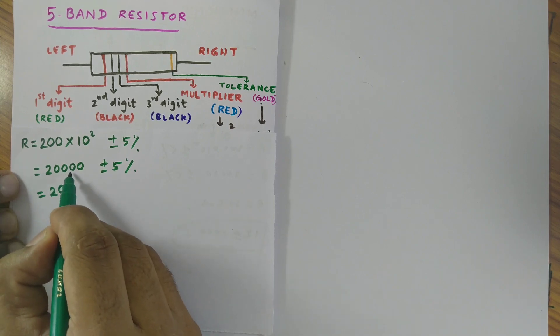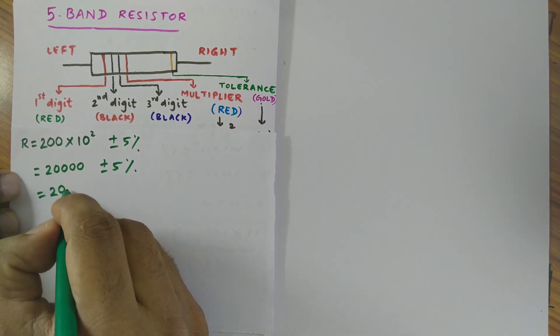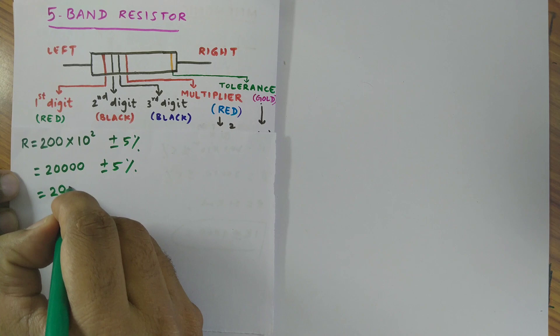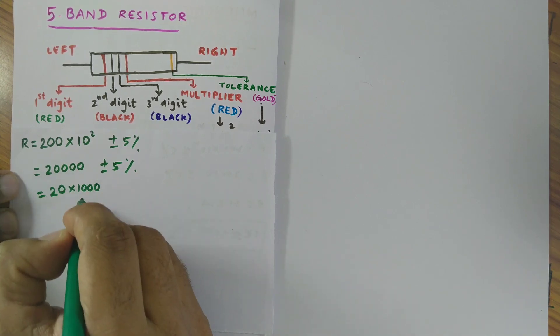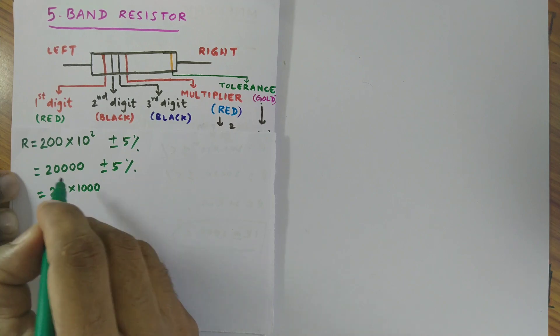Then 200 with 3 zeros. I write 1000. This part, I separate 200 into 1000 gives me 20,000.